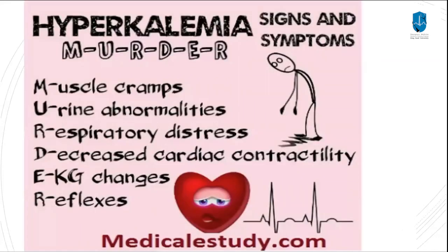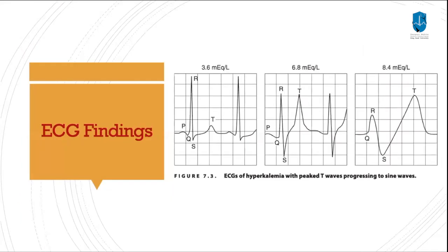This slide summarizes the symptoms you can find in hyperkalemia: muscle cramps, urine abnormality, respiratory distress, decreased cardiac contractility, ECG changes, and reflex changes. Regarding ECG findings, the changes correlate with the potassium level in the blood. If the level is 5.6 there will be a rise in the T wave. If it exceeds 6.8, it will be tented T waves. And if it exceeds 8.4, it can tend toward a sine wave pattern.